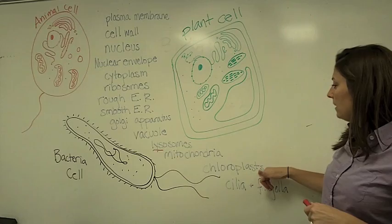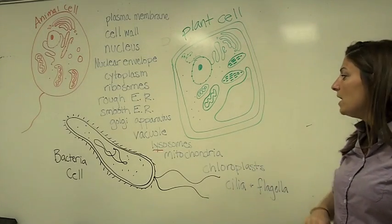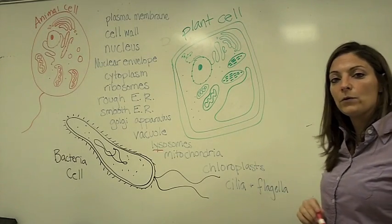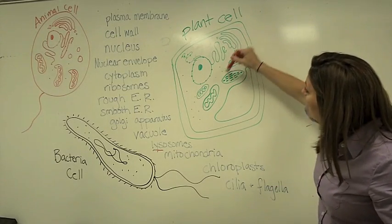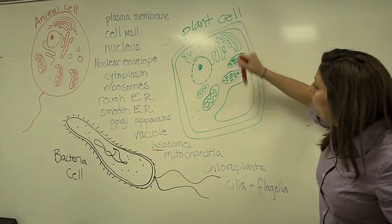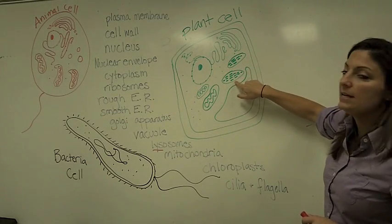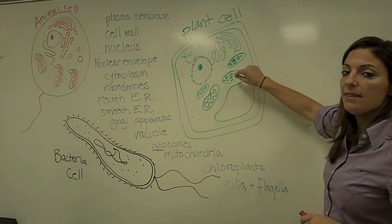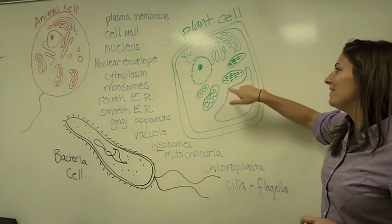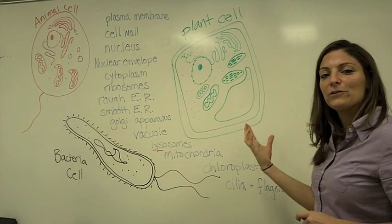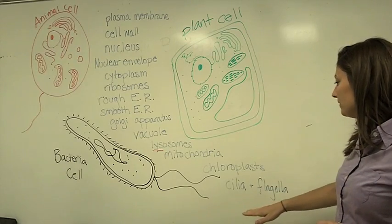Chloroplasts — we only find these in plant cells because that's where photosynthesis happens. They're kind of oval-like organelles, and inside there are stacks of discs. They are green even in real life because that's where the chlorophyll is — that's where the light gets absorbed. So chloroplasts are just in plant cells.